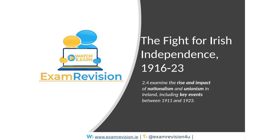Welcome to another Saturday session of Junior Cycle History at Exam Revision. In this lesson we're going to look at the fight for Irish independence from the years 1916 to 1923. The main events covered are the 1916 Rising, the War of Independence, the foundation of Northern Ireland, the Anglo-Irish Treaty, and the Irish Civil War.